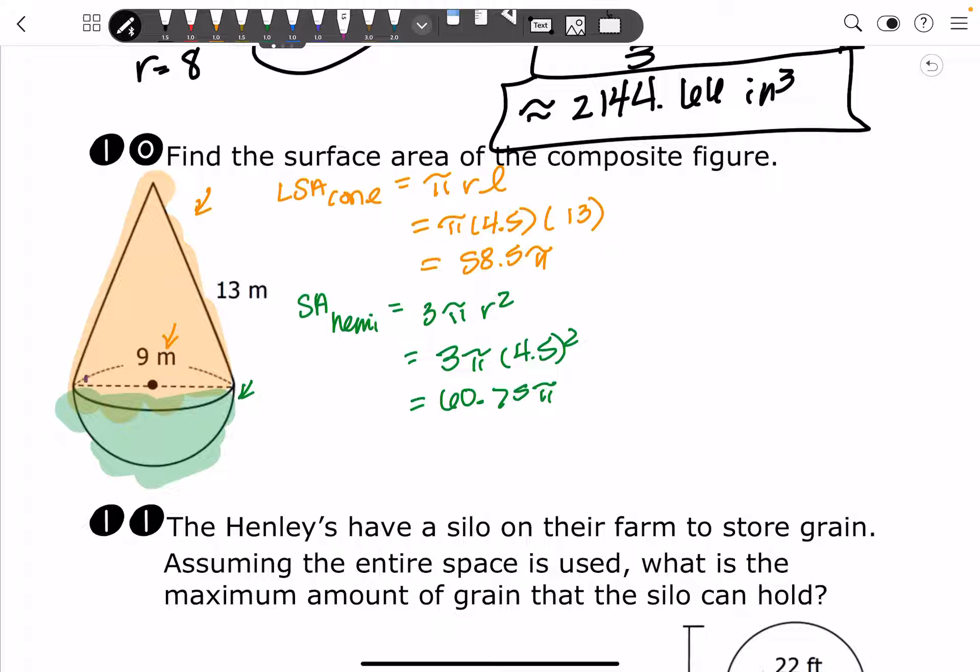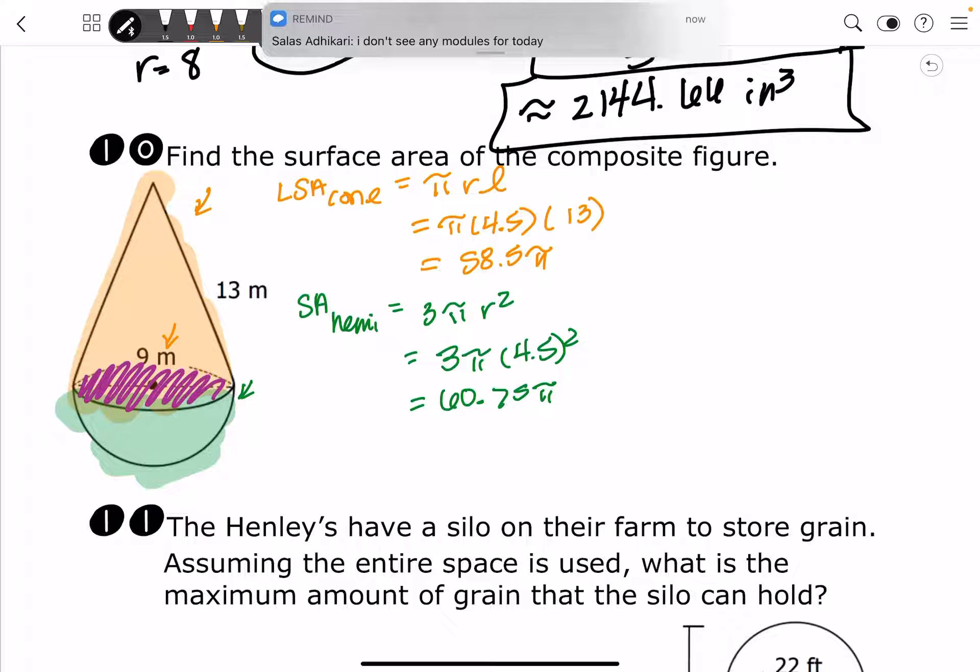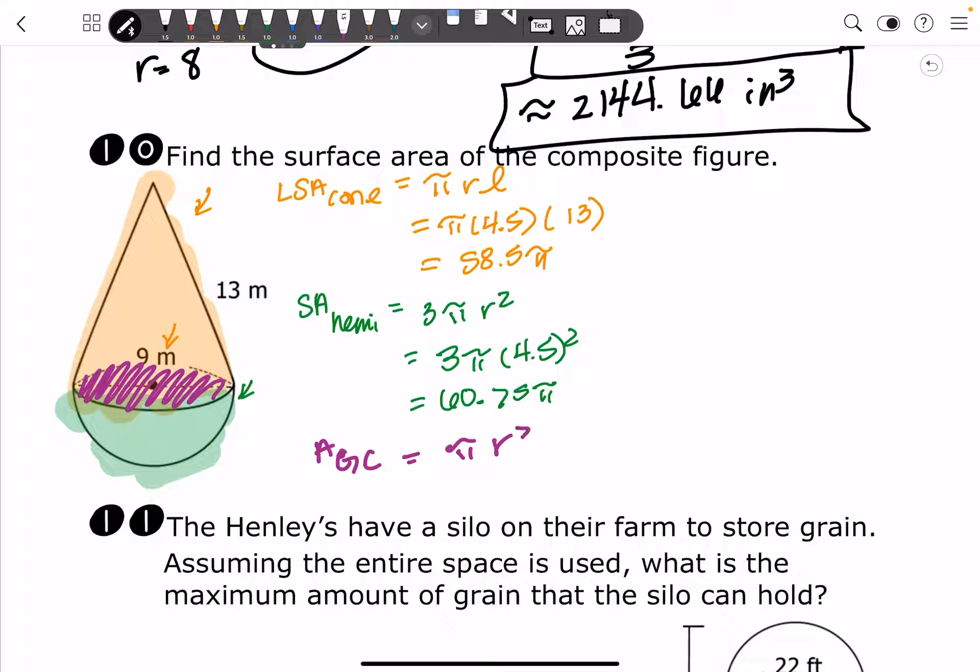Now, remember, this part right here where that overlap is happening, we're going to have to subtract that great circle. And so that great circle is going to be pi r squared. So we're going to do pi times 4.5 squared. And that gets us 20.25 pi.